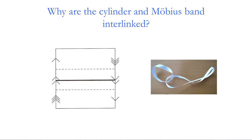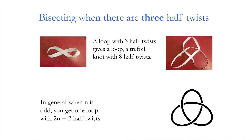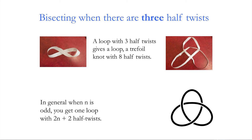You can use the same technique to show what happens with more half-twists. A Möbius band with two half-twists, when cut, yields two bands both with two half-twists, but interlinked. With three half-twists, the band looks like an infinity symbol or figure eight, and cutting it down the centre produces a trefoil knot.